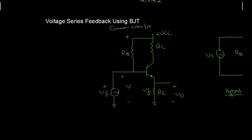This configuration is also called the emitter follower configuration because the output voltage at the emitter will be approximately equal to the input voltage and also in phase. This topology is voltage series feedback because at the output we have the voltage, at the input we have the voltage, and the feedback and input signals are connected in series.